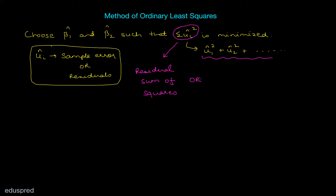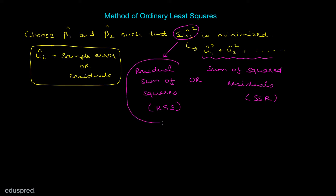Some professors and textbooks also use the term sum of squared residuals. You can either call it residual sum of squares, with abbreviation RSS, or sum of squared residuals, with abbreviation SSR. I feel more comfortable with residual sum of squares, so basically in the method of OLS we are choosing beta1 hat and beta2 hat such that the residual sum of squares is minimized.